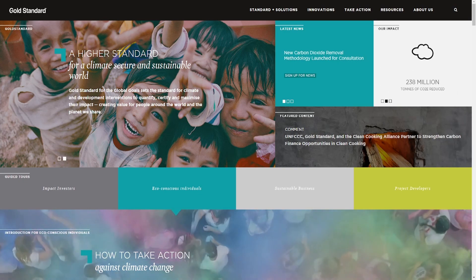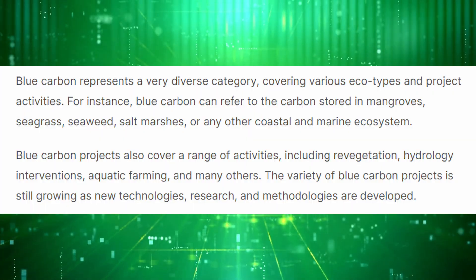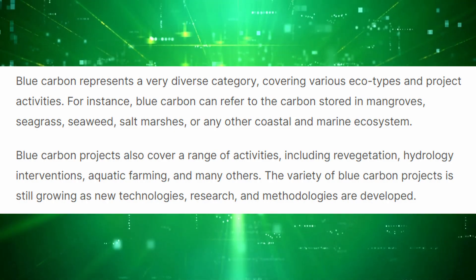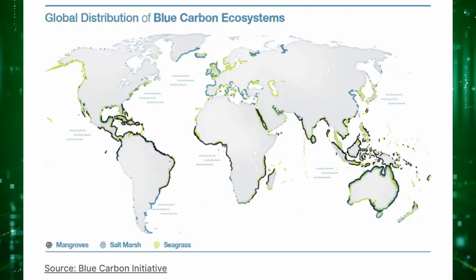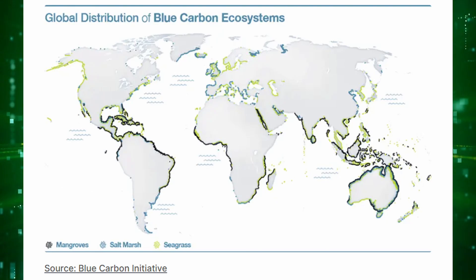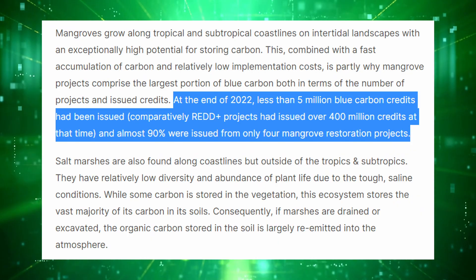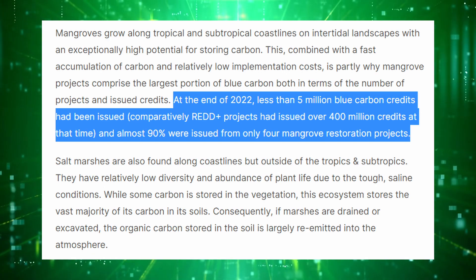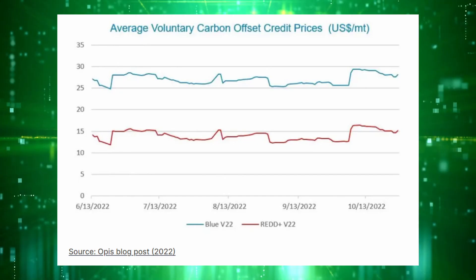The fourth major factor influencing carbon credit prices is project rarity. Blue carbon credits are a prime example — derived from nature-based projects involving carbon sequestration through seagrass, salt marshes, or other coastal and marine ecosystems. The most popular type is from coastal mangrove forests. As of end of 2022, fewer than 5 million blue carbon credits had been issued, compared to over 400 million REDD+ credits — with almost 90% of those issued from only four mangrove restoration projects. Blue carbon credits are quite rare in comparison, and that definitely shows up in the price.